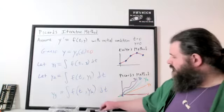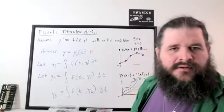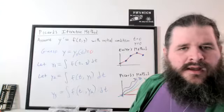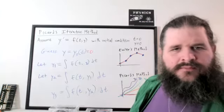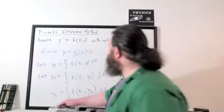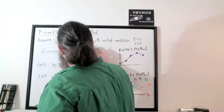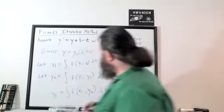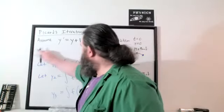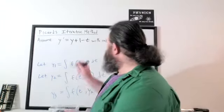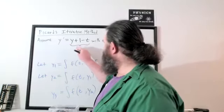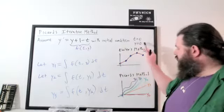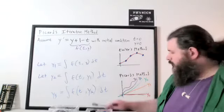Let's try actually running the numbers. We're looking at the differential equation y prime equals y plus one minus t, with initial condition at 0, 0. So that is what we're going to call f of t and y. We're assuming the initial condition is 0, 0, because we have to standardize to the origin for this method to work.